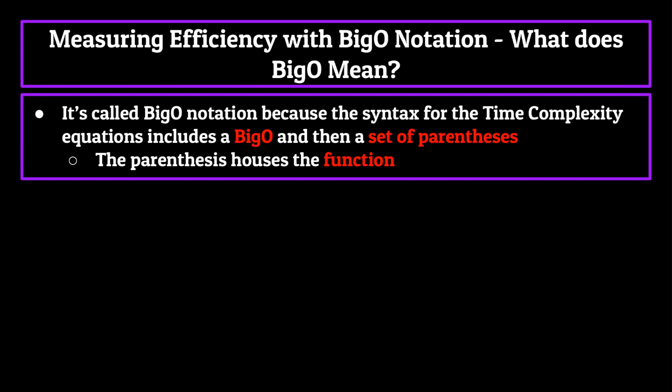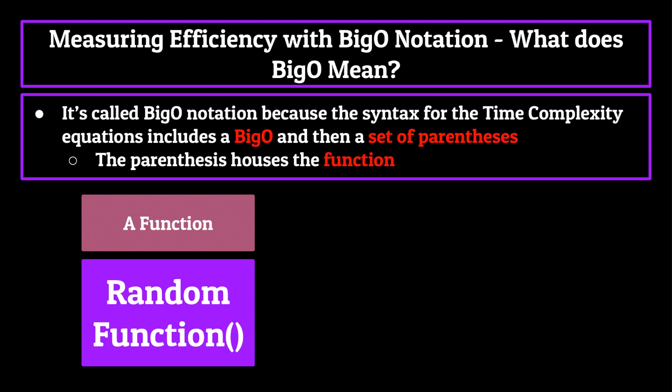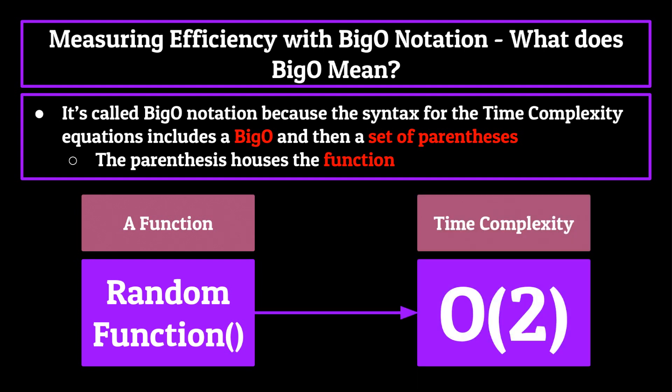Now the reason it's called Big O notation is because the syntax for these particular equations includes a big O and then a set of parentheses. Inside the parentheses will include some function which will correctly return the number of operations needed to be run by the computer. For example, let's say we have a fake function—it can really be anything, the purpose in this case is irrelevant.